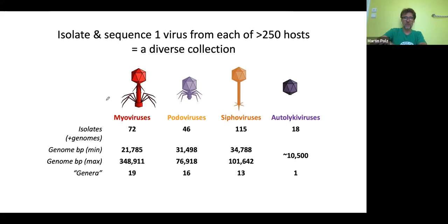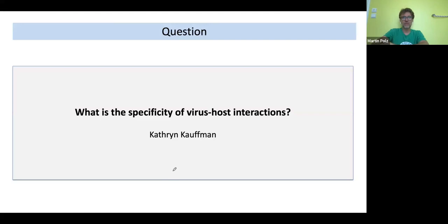Overall, we found a very diverse collection of viruses representing all the major viral groups — myoviruses, podoviruses, siphoviruses — and then we also found a new type of virus that I'll talk about in a few slides. The collection is actually quite diverse, with genera assigned across all major groups.